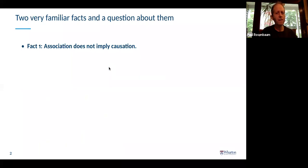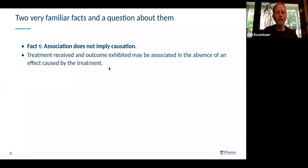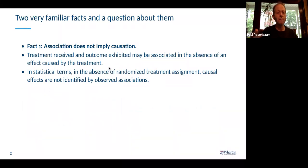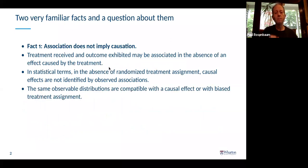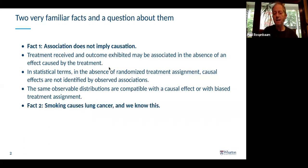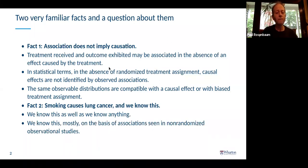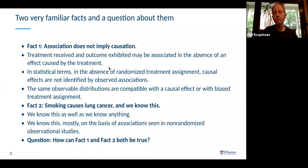I'll begin with two familiar facts and a question. The first fact is that association does not imply causation. In the absence of random assignment, causal effects are not identified by observed associations — the observed distributions could be compatible either with a causal effect or with biased treatment assignment. The second fact is smoking causes lung cancer, and we know this as well as we know anything — mostly from the very sort of studies where association does not entail causation. So the question is: how can both facts be true? They sound contradictory.